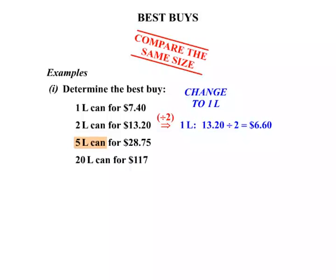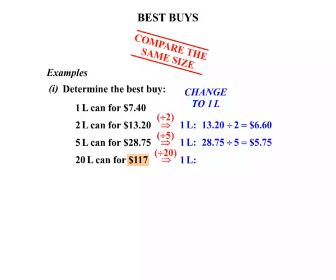Now the 5L can. To break that down to a 1L size we need to divide by 5. So we have our price of $28.75, divide that by 5, and we get $5.75. Now the 20L can. To break that down to a 1L size we need to divide by 20. The $117 divided by 20 works out to be $5.85.